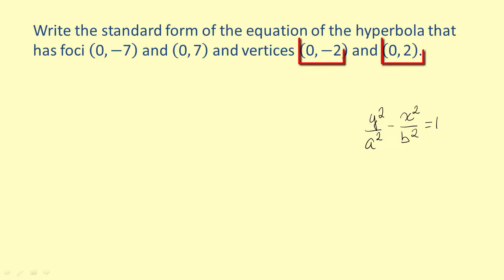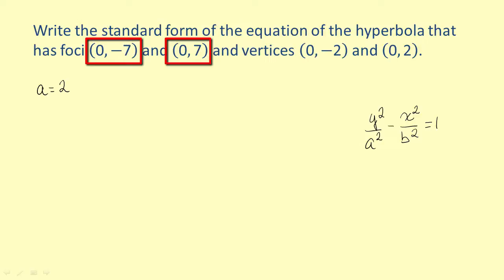We know that the vertices are of the form 0 plus or minus a, so that means a equals 2. We also know that the foci have the form 0 plus or minus c, so we can write c equals 7. To write the equation, we need to find b squared. Since we have a and c, we know we can find b squared using the equation b squared equals c squared minus a squared.